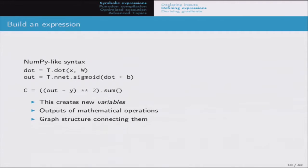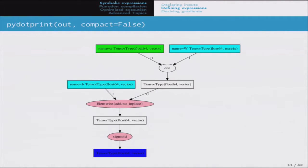From these inputs, we can define expressions that build new intermediate variables as results of computation. For instance, we can define the product of X and W, add a bias, apply a sigmoid function, and that becomes our output variable. From the output and Y, we can define the squared error cost. Those new variables are connected to previous ones through the operations we define, and we can visualize the graph structure using, for instance, pprint, which is a helper function.